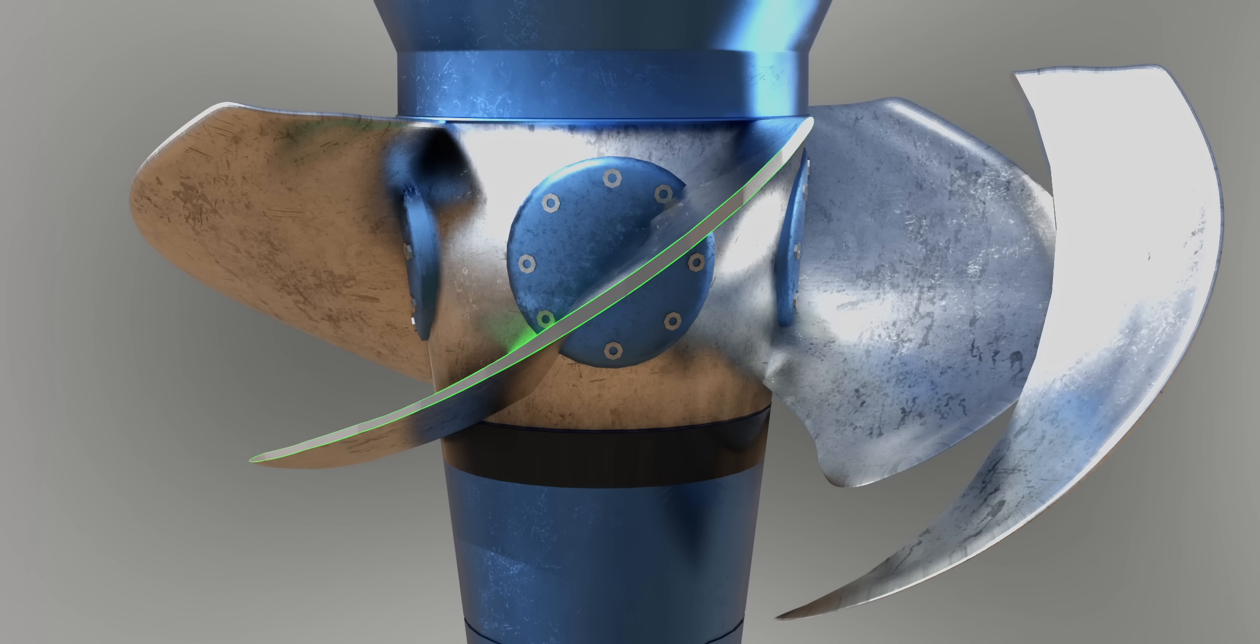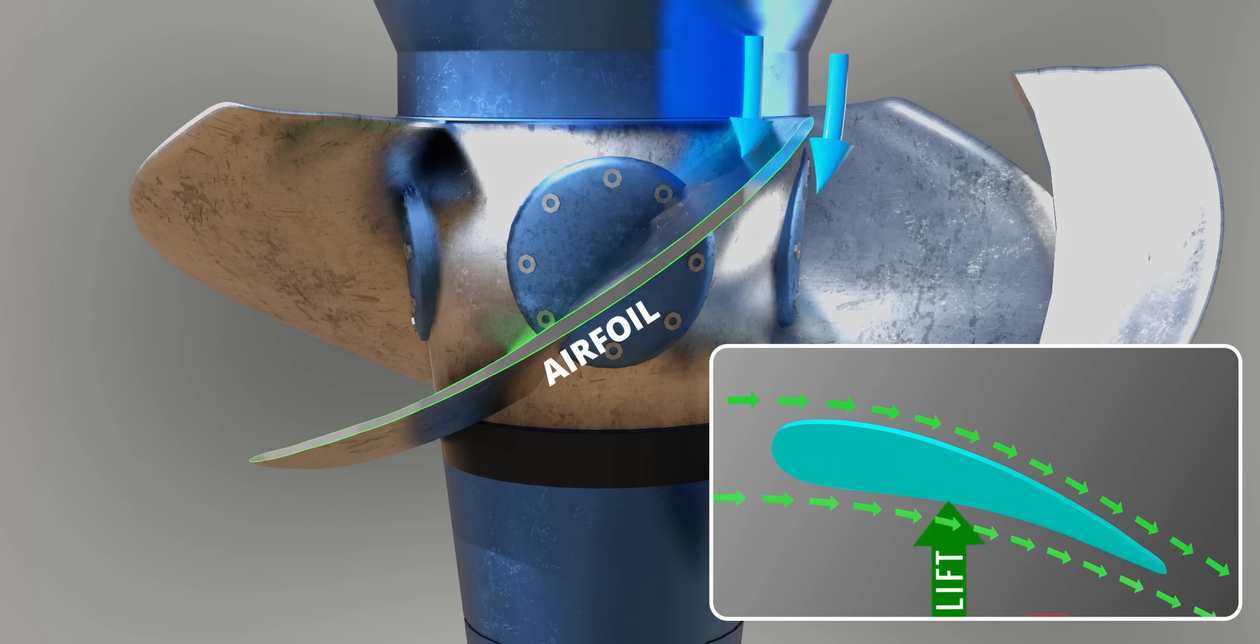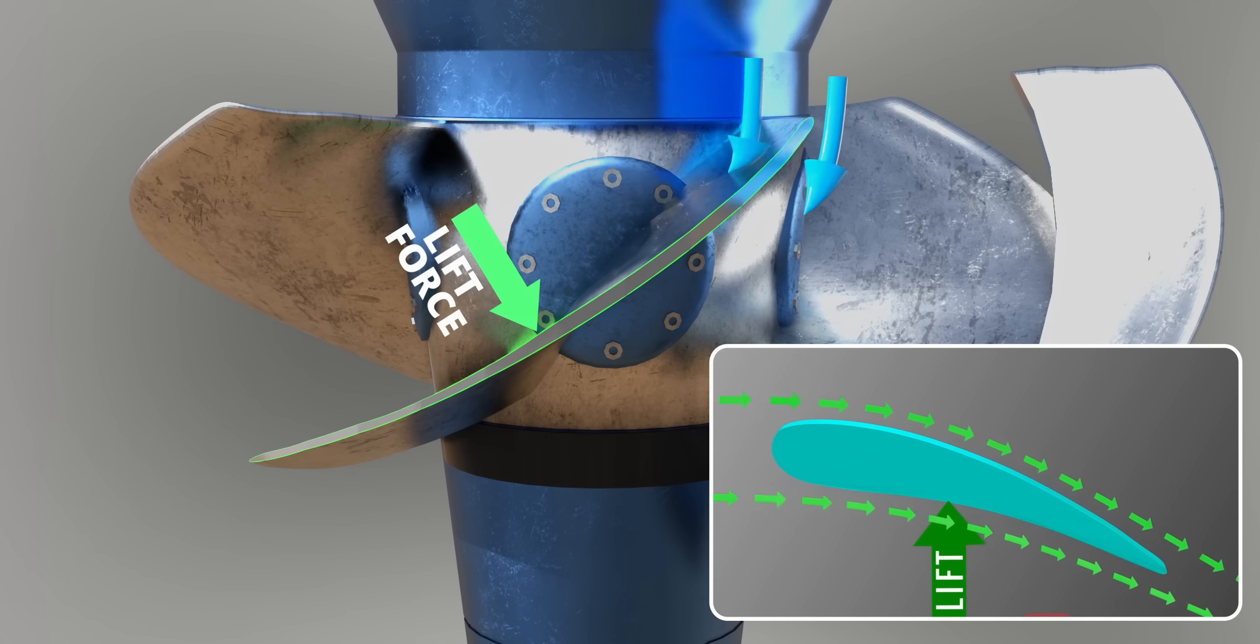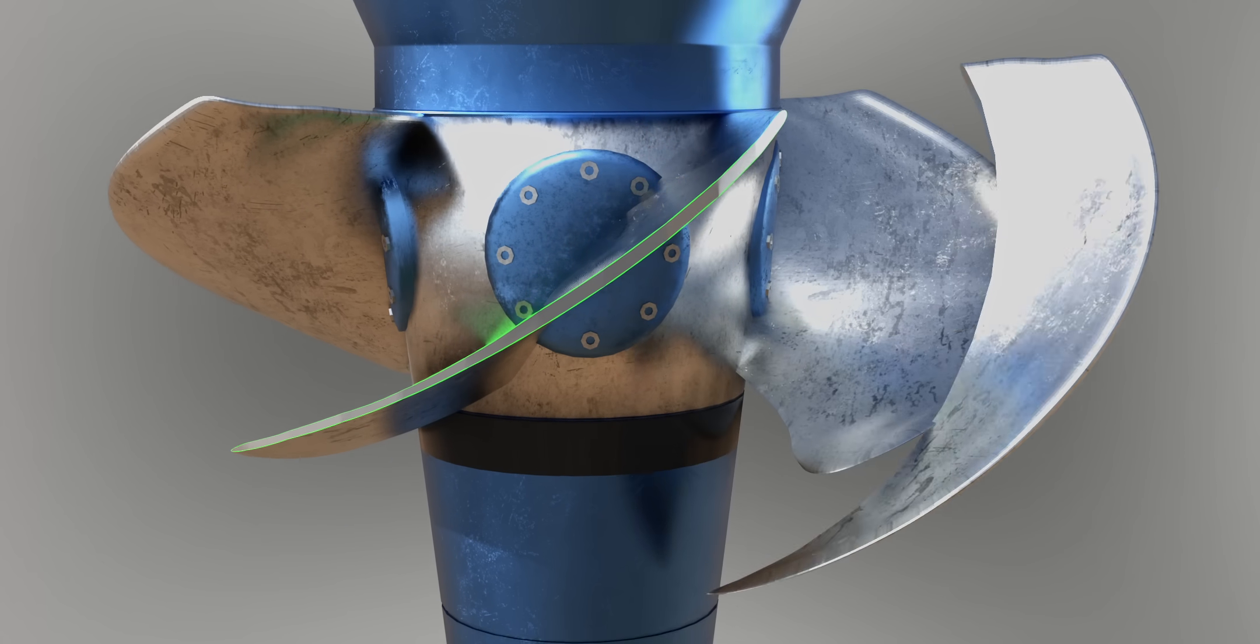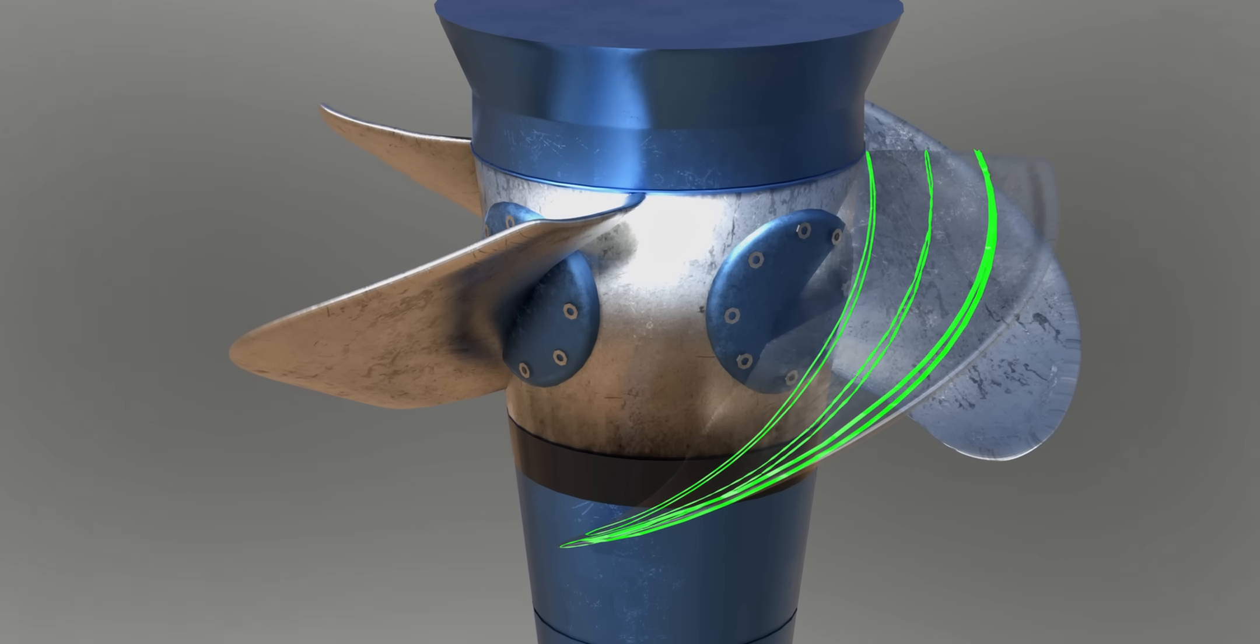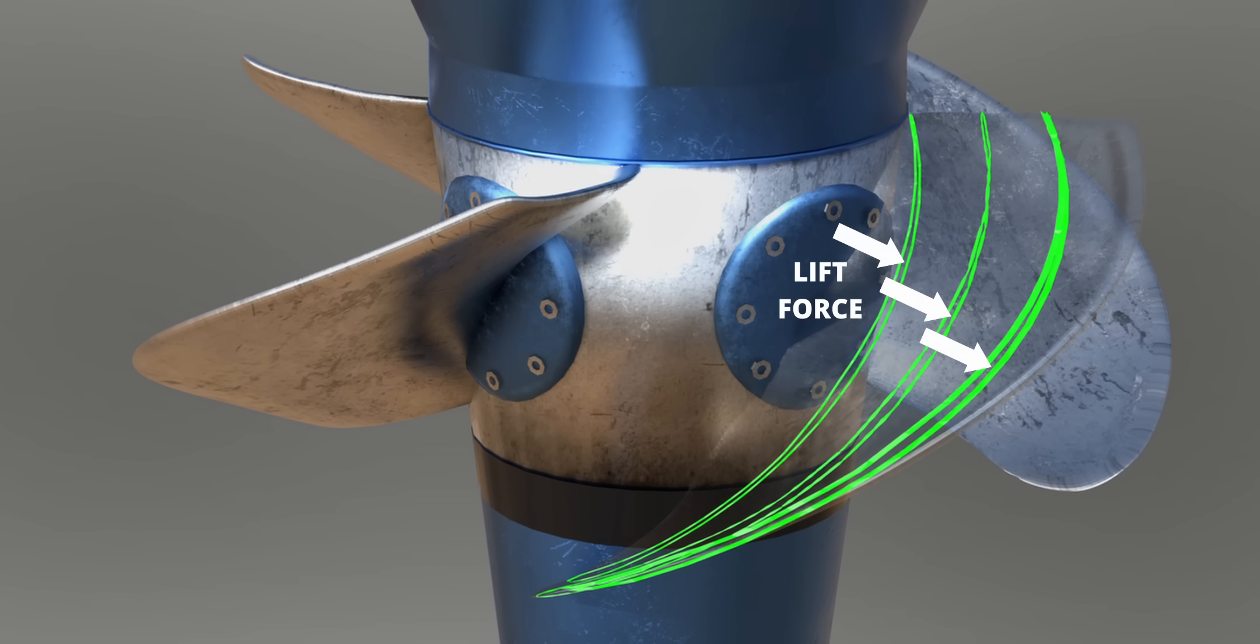It's interesting to note that each cross-section of the blade is an airfoil. When there is a flow around the airfoil, lift force will be produced as shown. This means that on our Kaplan Turbine Blade, at every cross-section, lift force will be produced.